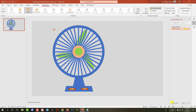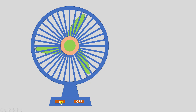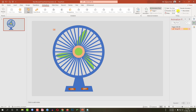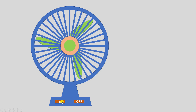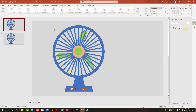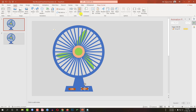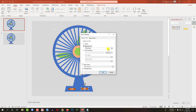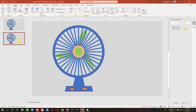Now if I want to watch the slide show, let me click on 'on' — our fan is rotating very fast. I can easily change the duration from here. Let me press Ctrl+D to duplicate and go to here. Let me select the 'off' button, go to Insert, go to Action, Hyperlink to Next Slide. Click OK. Let me remove the animation from here.